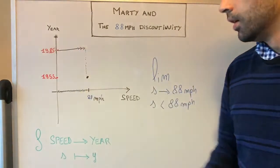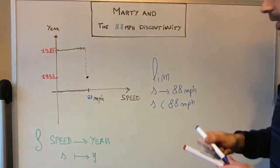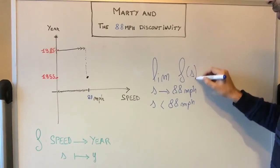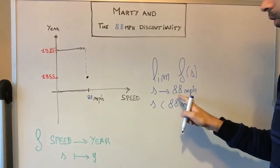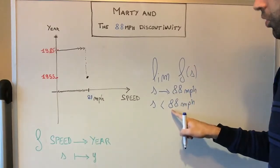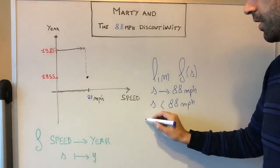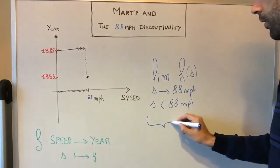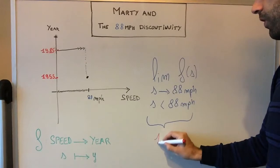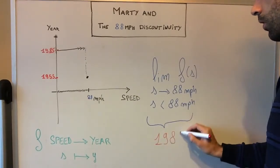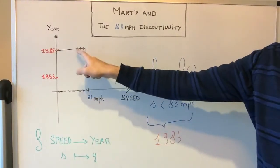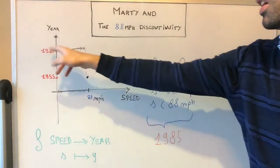So this guy, LIM of f of s when I approach 88 mph just before 88, is 1985. Of course, because we didn't reach 88 mph so far, so we are still in 1985.